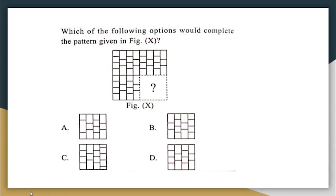Next question: which option would complete the pattern given in figure X? The pattern in figure X has three horizontal lines, then two horizontal lines, again three, then two. Similarly there are vertical lines in between. Checking option A: it has only two horizontal lines then 2, 3, 2 — that is not the correct pattern. Option C starts with 3, then 2, then 3 — seems correct — but then has 4 lines, so that is also wrong.